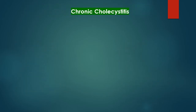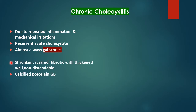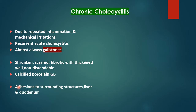Chronic cholecystitis is due to repeated inflammation and mechanical irritation of the gallbladder by gallstones — recurrent attacks lasting weeks or months, almost always due to gallstones. As a result, the gallbladder becomes shrunken, scarred, fibrotic, with a thickened wall and non-distensible — accounting for the Courvoisier's sign. At times, chronic inflammation leads to a calcified gallbladder — porcelain gallbladder. There are often adhesions to surrounding structures especially the duodenum and liver, making cholecystectomy difficult.